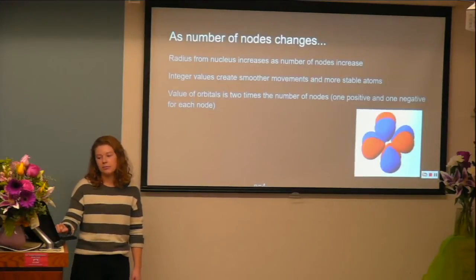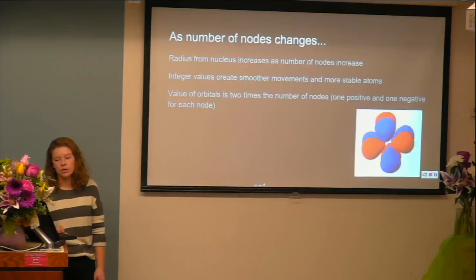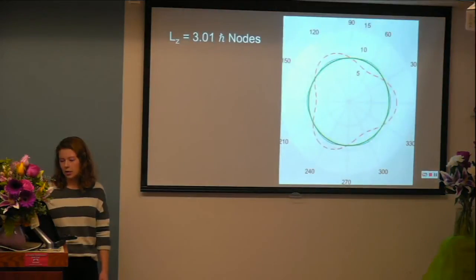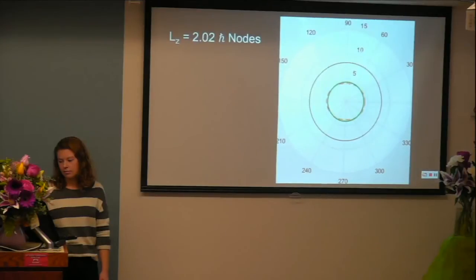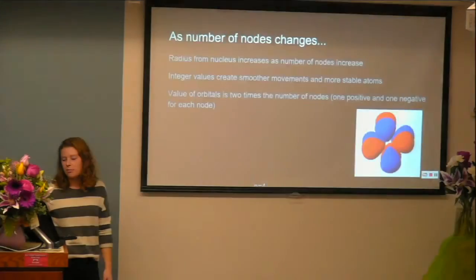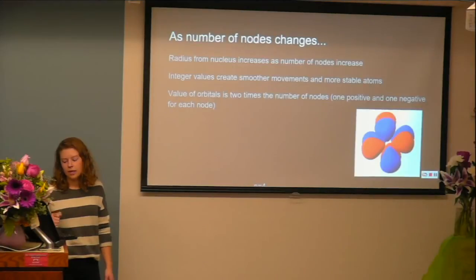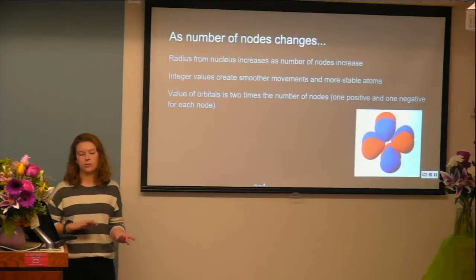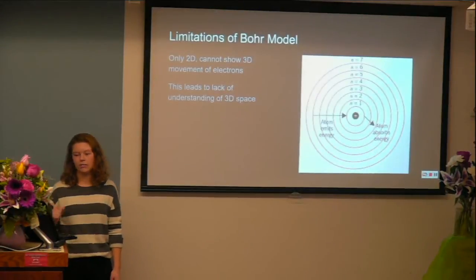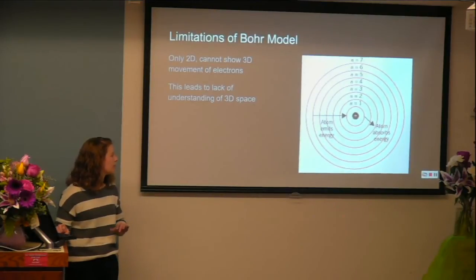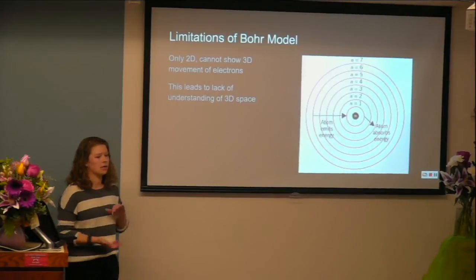Conclusions: as the number of nodes increases, the radius from the nucleus increases. Comparing the radius of each, it clearly gets larger as we move forward, finding it largest at three nodes. Even integer values create smoother movements and more stable atoms. The value of orbitals is two times the number of nodes — one positive and one negative for each node. Finally, limitations of the Bohr model: it's only a 2D model and can't show 3D movement, which led to a lack of understanding of what the electron would do in a 3D space.